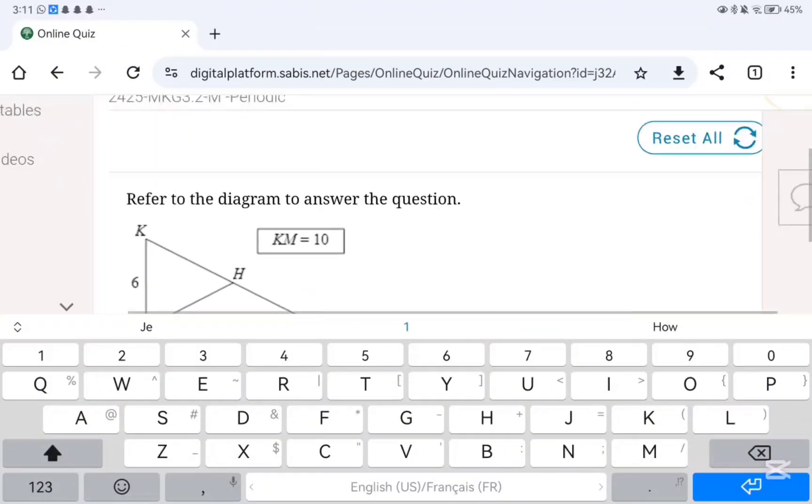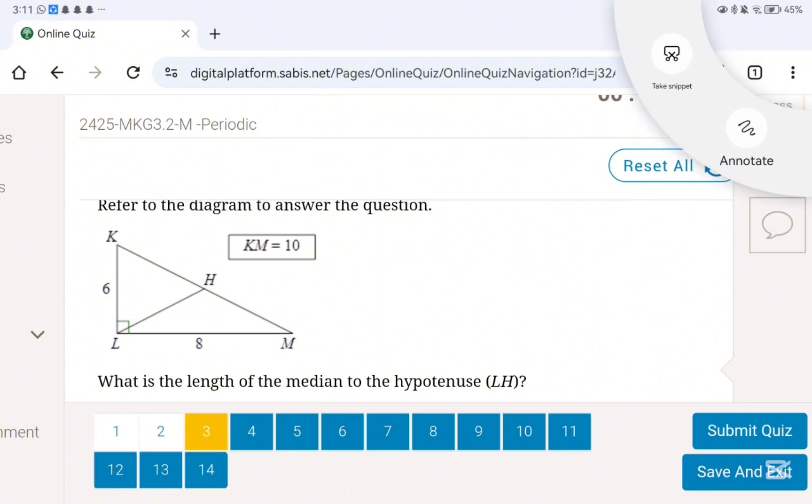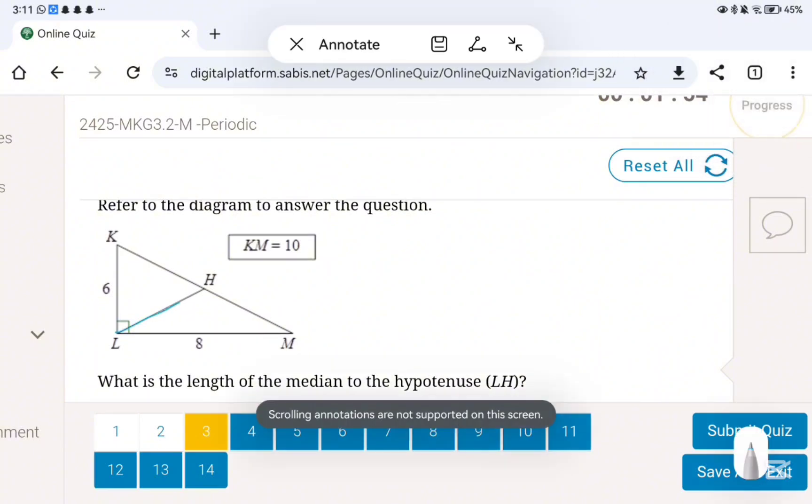Okay, in this question, the rule is that HL is equal to half of the hypotenuse or the altitude, the median, the angle bisector - it's half of the hypotenuse.